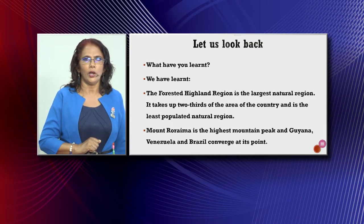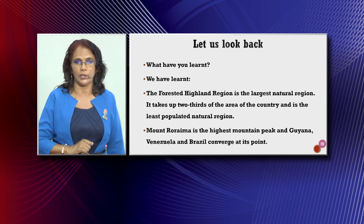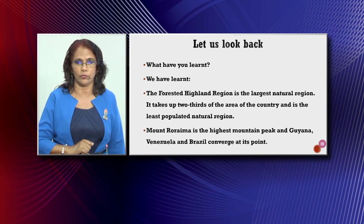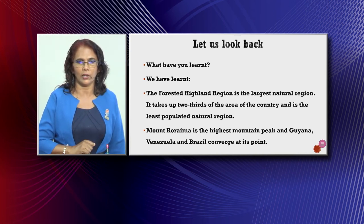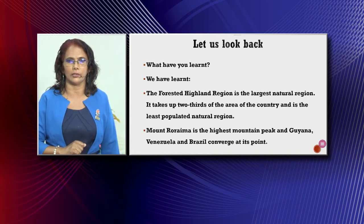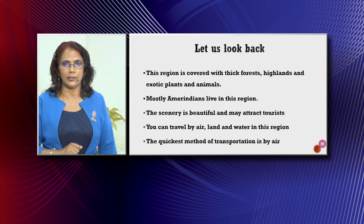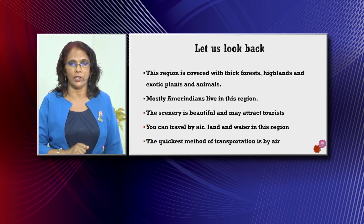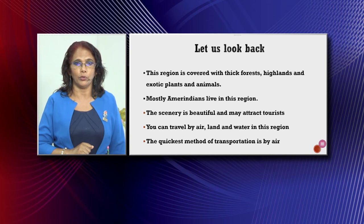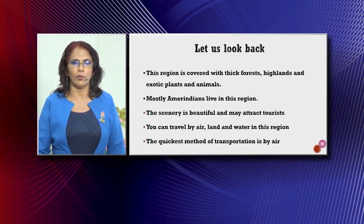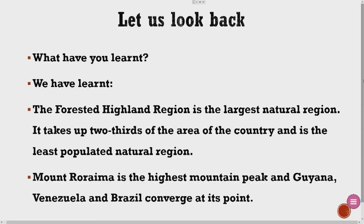Let us look back at what we have learned. The forested highland region is the largest natural region — it takes up two-thirds of the area of the country and is the least populated natural region. Mount Roraima is the highest mountain peak, and Guyana, Venezuela and Brazil converge or meet at its point. This region is covered with thick forests, highlands and exotic plants and animals. Mostly Amerindians live in this region. The scenery is beautiful and may attract tourists. You can travel by air, land and water in this region, and the quickest method of transportation is by air.